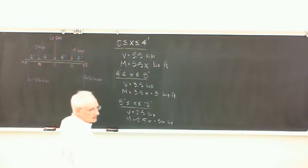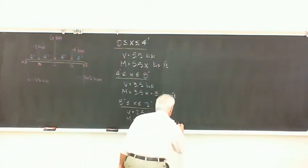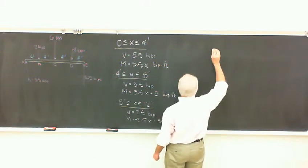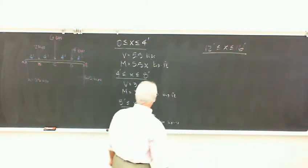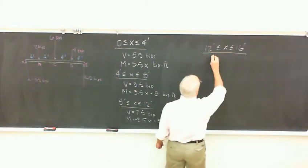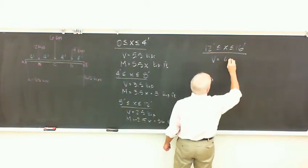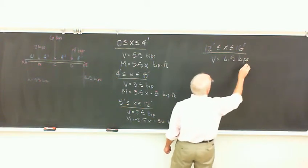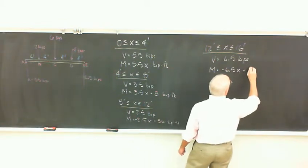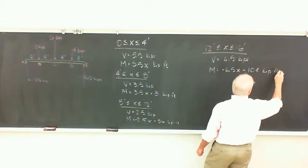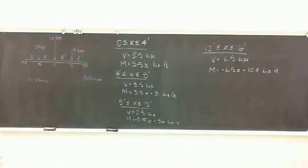And then we had the last section, with a shear of 6.5 and the moment was negative 6.5x plus 104. So that's just the summary of what we had, and clearly there's some interplay going on between these.